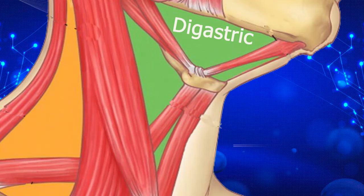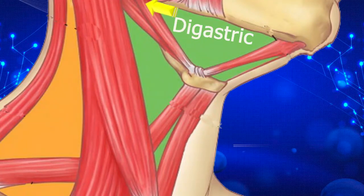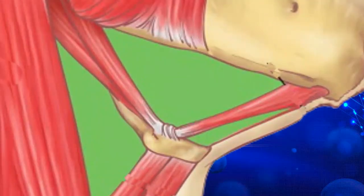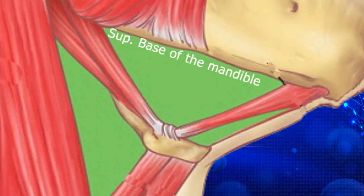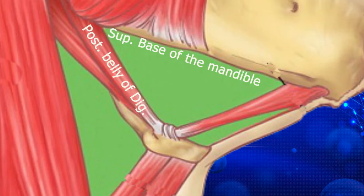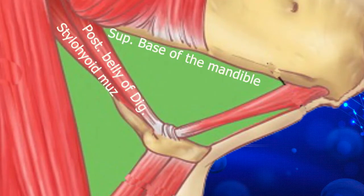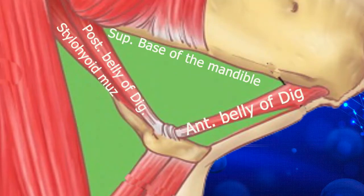It is called the digastric triangle because it is bounded by the two bellies of the digastric muscle, the anterior belly and the posterior belly. It is also called the submandibular triangle because it is located just below the mandible and contains the submandibular gland. The superior boundary is formed by the base of the mandible and the line joining the angle of the mandible to the mastoid process. Posteriorly, we will find the posterior belly of the digastric and the stylohyoid muscle. The stylohyoid muscle runs from the styloid process to the hyoid bone. Anterior-inferiorly, we will find the anterior belly of the digastric.